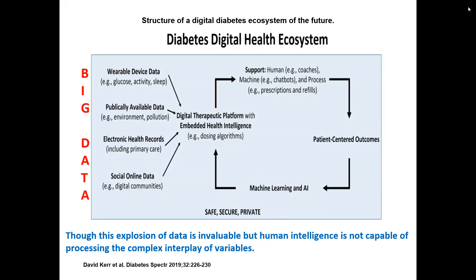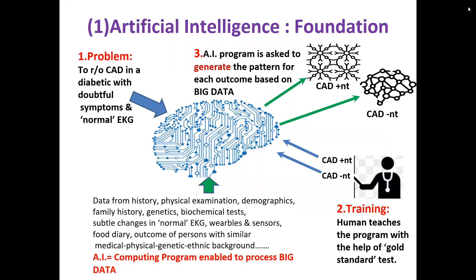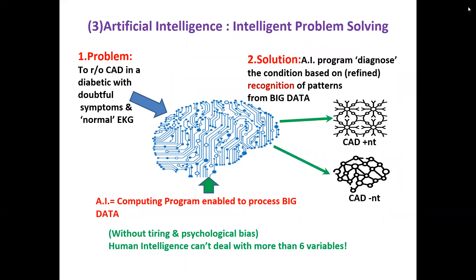The diabetes digital health ecosystem uses wearable device data, publicly available device data, electronic health records, and social online data, all feeding into a digital therapeutic platform for patient-centered outcomes. Through machine learning and artificial intelligence, we can derive useful data to guide therapy decisions. AI is given a problem and asked to generate patterns for each outcome based on big data, trained using gold standard tests.